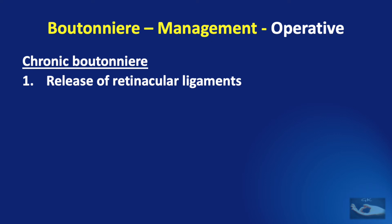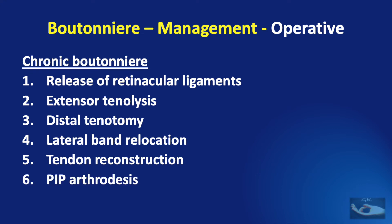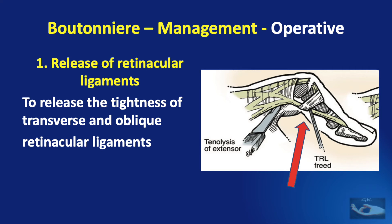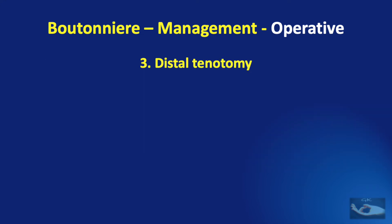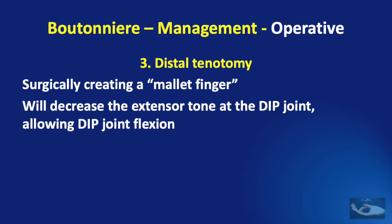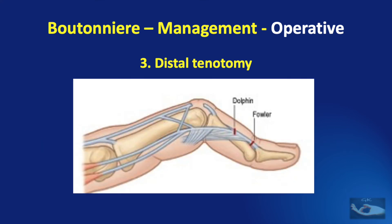Procedures are done either to decrease tone at the distal interphalangeal joint or increase tone at the proximal interphalangeal joint. There are basically 6 procedures to correct a chronic Boutonniere deformity: release of the retinacular ligaments, extensor tenolysis, distal tenotomy, lateral band relocation, tendon reconstruction, and PIP fusion or arthrodesis. Release of the retinacular ligaments refers to releasing tightness of the transverse and oblique retinacular ligaments. Extensor tenolysis refers to freeing the tight extensor expansion from adhesions, especially from the middle and distal aspects of the proximal phalanx. Distal tenotomy consists of surgically creating a mallet finger.